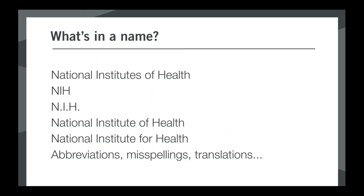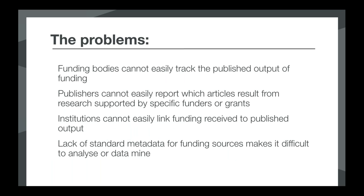When we first started thinking about this about five or six years ago, we had to tackle the issue of funder names. As authors are entering funding information as free-form text in acknowledgements, there are obviously going to be a lot of inconsistencies. People use abbreviations, alternative names, or it could simply be a case of misspelling something. Without this uniformity of naming, nobody involved can really make enough sense of the data — not the funding bodies, the publishers, or the institutions. So we decided to pull that into standard Crossref metadata so that it can be more effectively used on a large scale.